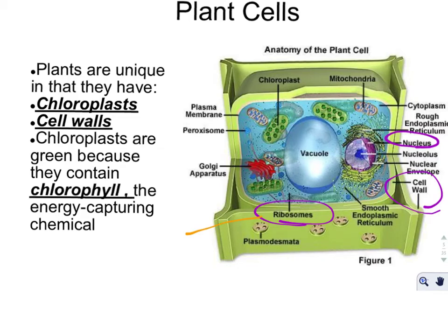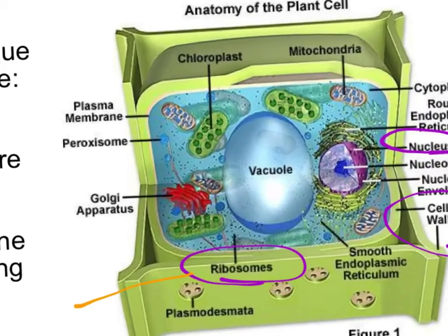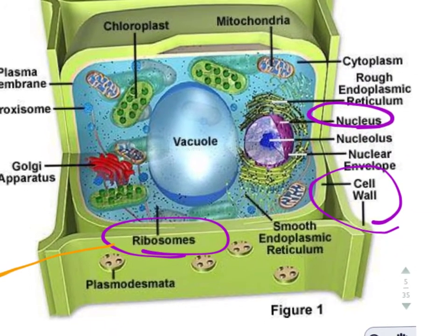A few other important organelles are the nucleus — your nucleus holds all your DNA. You also have the cell walls. The cell wall is the protective structure for plants because plants can't move, so they need that additional barrier. Different from an animal cell, which doesn't have a cell wall and also doesn't have chloroplasts. All the other organelles are essentially the same.